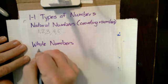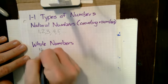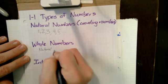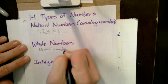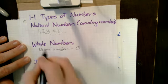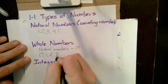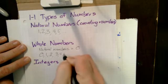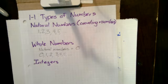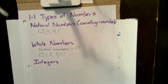Then we've got our whole numbers, and the whole numbers are just the natural numbers plus zero. So that's the set 0, 1, 2, 3, 4, 5, etc. Every number that we can think of that has no decimals and no fractions — those are all whole numbers.